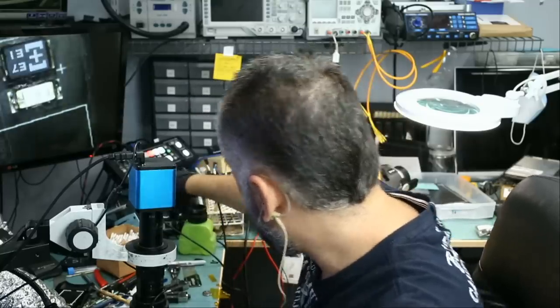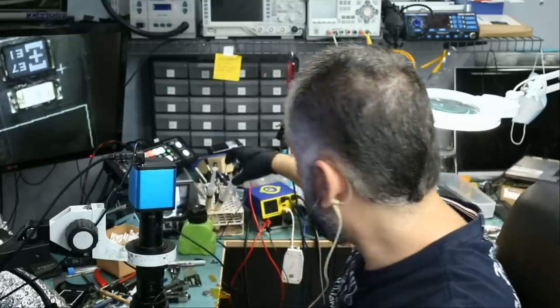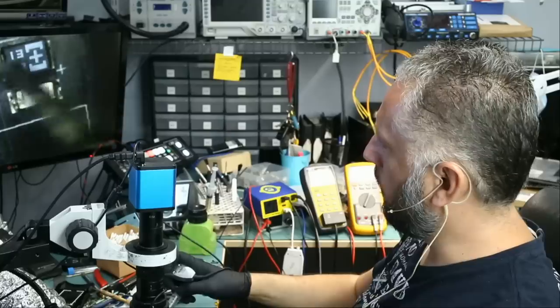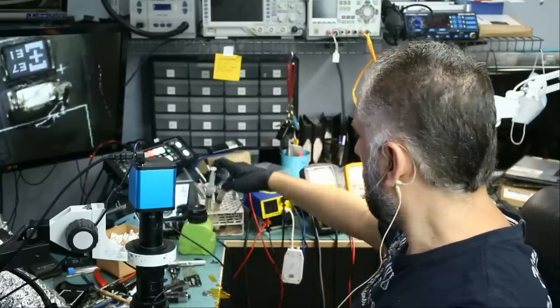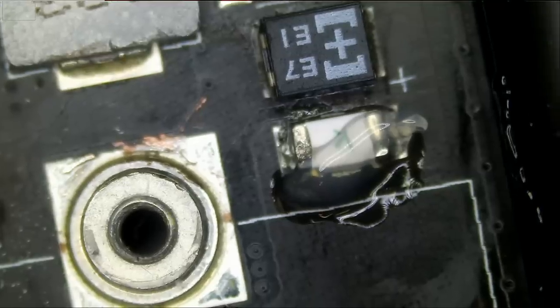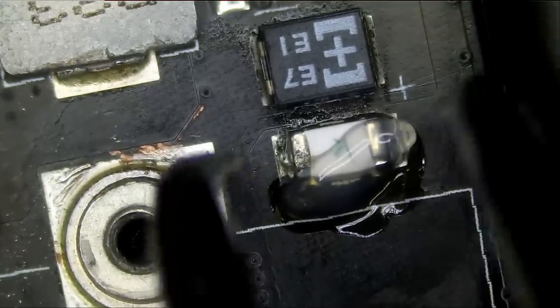We're going to use hot tweezers to remove that component. I'm currently at 400 degrees. Let me go to 450. We're going to apply a tiny bit of flux on this fuse here, and let's switch over to the microscope.